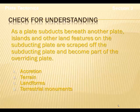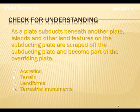So as a plate subducts beneath another plate, islands and other land features on the subducting plate are scraped off and they become part of the overriding plate. What is this process called? Is it A, accretion; B, terrain; C, landforms; or D, terrestrial monuments? Please write the correct answer on the side of your notes.